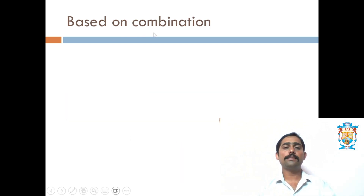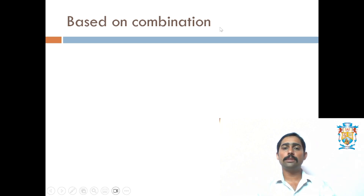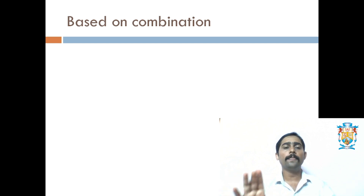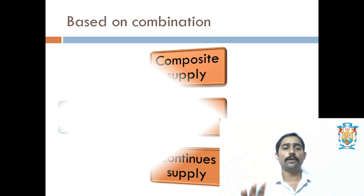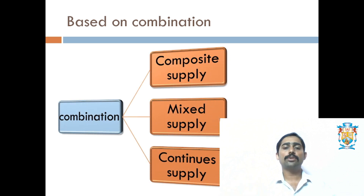The next type is based on combination, where more than one good is sold together — either two products or more than two products sold together. Under combination, we have three types of supplies: composite supply, mixed supply, and continuous supply.